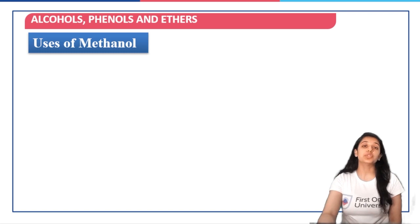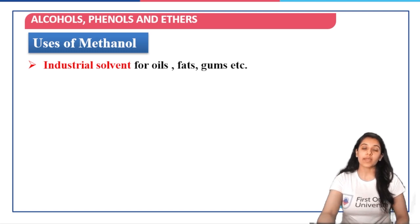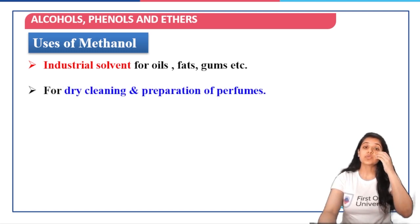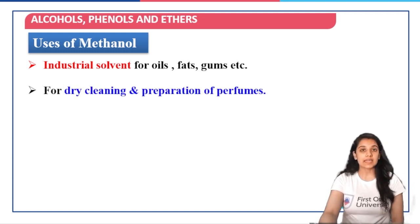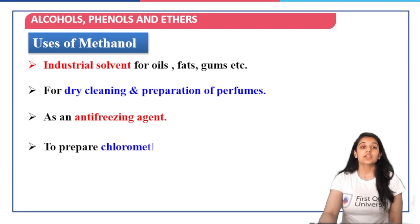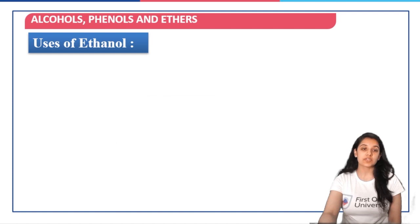Now we move on to the uses of methanol. Methanol is used as an industrial solvent for oils, fats, gums, etc. It is also used for dry cleaning and preparation of perfumes. It is used as an antifreeze agent, and also to prepare chloromethane, dimethyl sulfate, formaldehyde, etc.